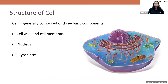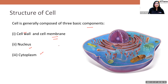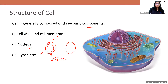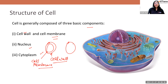So basically, a cell is generally made up of three basic components: cell wall and cell membrane, nucleus, and cytoplasm. Cell membrane is the essential one because cell wall is only present in plant cells. In a plant cell, the cell wall is always present, and internal to it, a cell membrane is there. In an animal cell, there is only cell membrane and then the central nucleus is present.